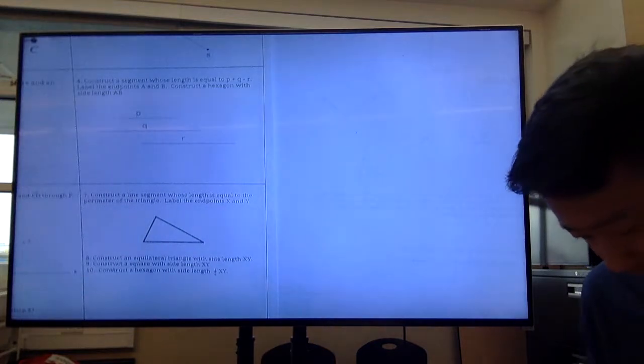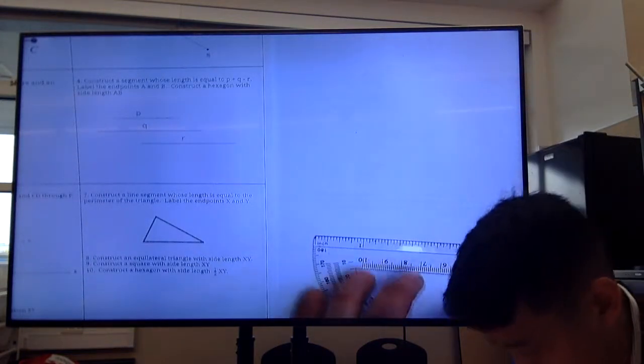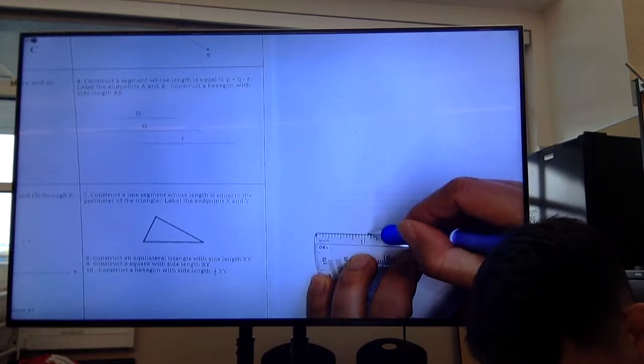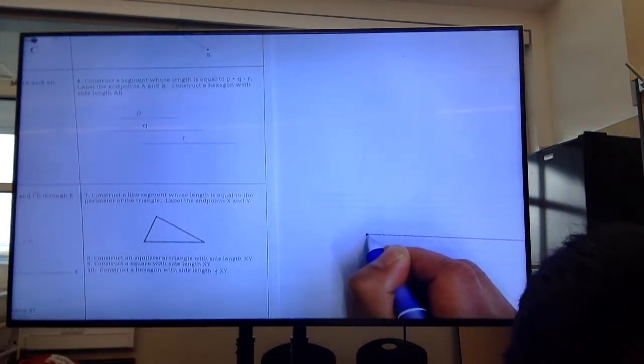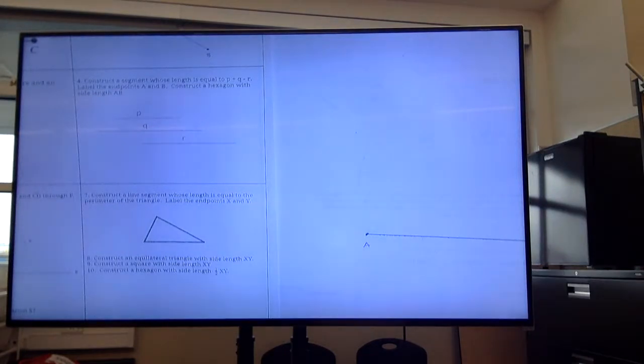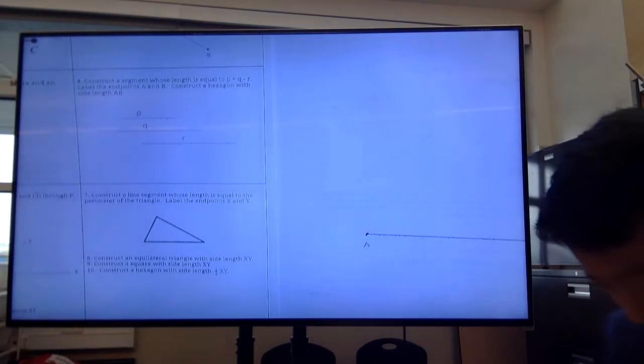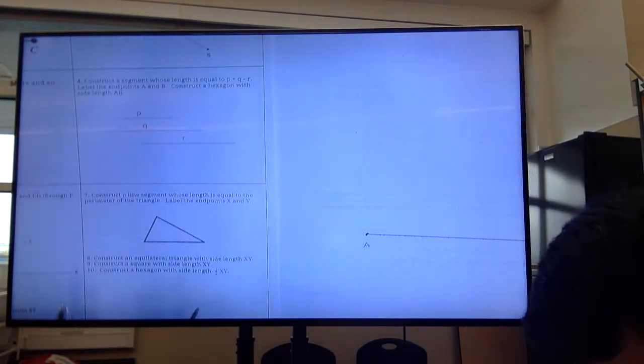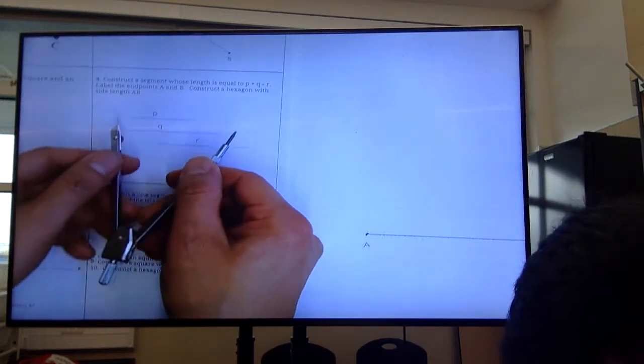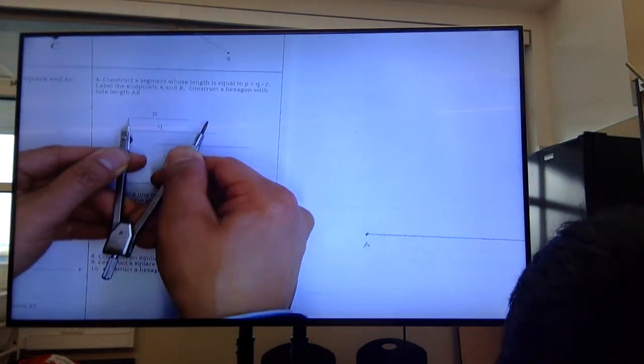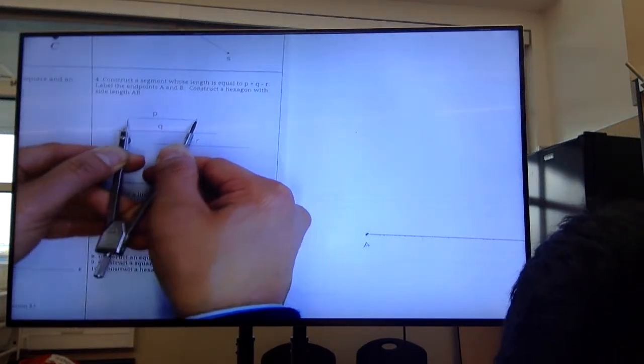The first thing we need to do is start with the baseline, then label one of the endpoints A. We want to make a segment that is P plus Q minus R. Put our compass on one end of P, make an arc through the other end, so there's P plus Q.